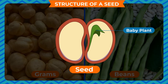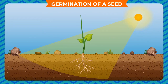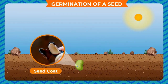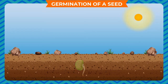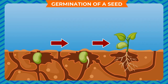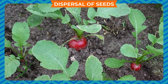The baby plant remains inside the seed until it gets favorable conditions to grow. Germination of a seed: a seed needs soil, air, water, and sunlight to grow into a new plant. When a seed is sown in soil, it takes in water and air through the seed coat. The embryo cells grow and break the seed coat. A root emerges first, followed by a shoot containing leaves and stem. This process of growth from a seed into a young plant, known as a seedling, is called germination.